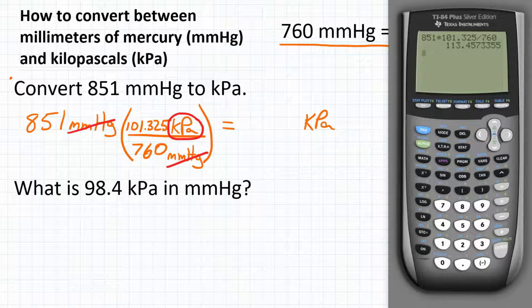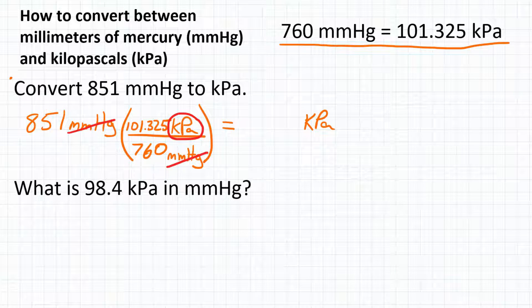Hit equals, and we get 113.45733355. Let's round that to just three significant figures, so we would get 113.